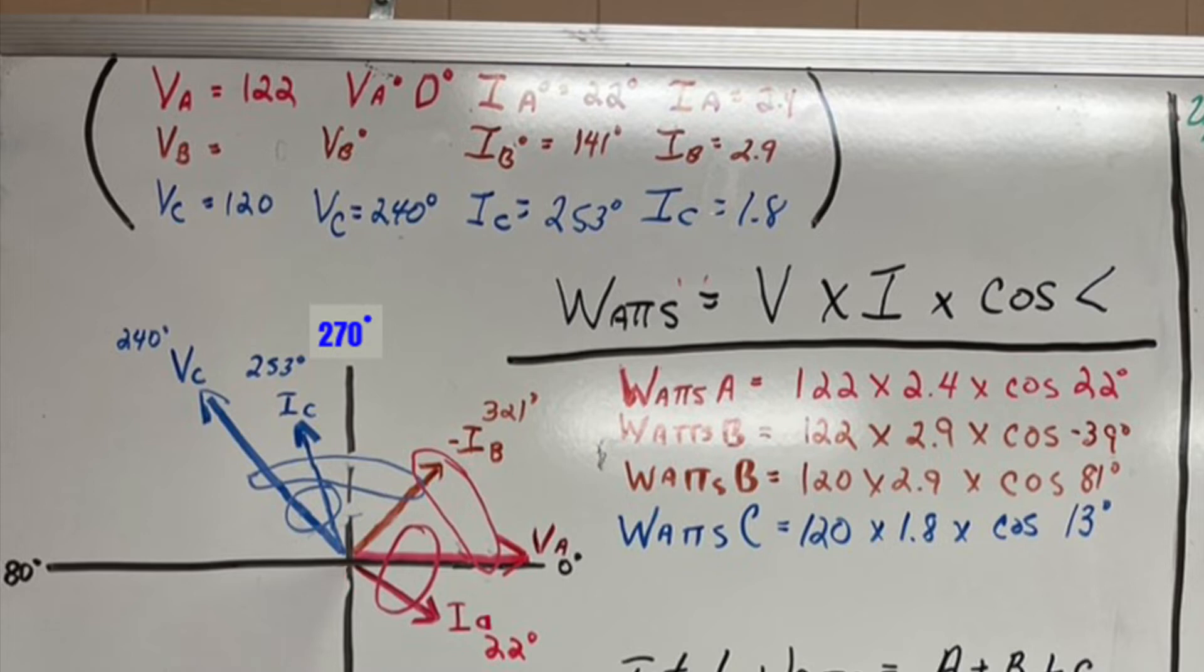And so now we got to go to the other side of B and we're going to take C voltage and circle C voltage to negative IB. And we're going to take that voltage and go 120 volts times the current 2.9 on IB times the cosine of 81 degrees. 81 degrees is 321 degrees minus 240. That's the distance between 240 and 321 degrees.